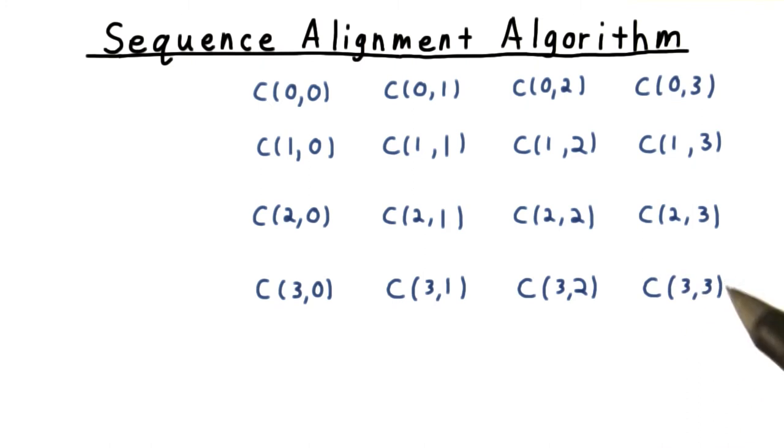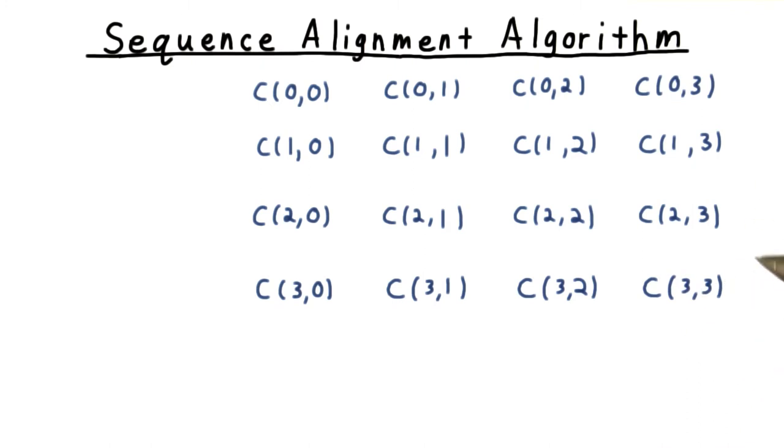Notice that it's natural to organize our sub-problems in a grid like this one. Knowing C33, the cost of aligning the full sequence, depends on knowing C32, C22, and C23.